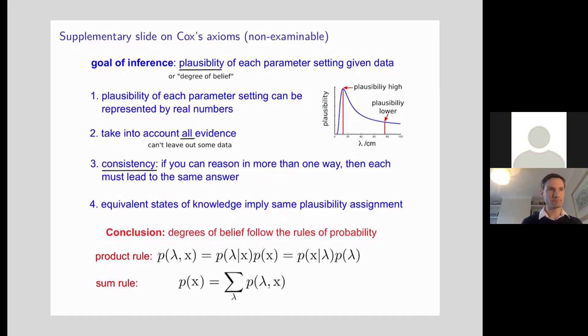So what are those axioms? First off, the zeroth axiom is exactly what we said in the lecture previously, which is that we're going to want to represent the plausibility of any setting of the parameters given the data using a real number. So the goal of inference in some sense is to return plausibility or degree of belief in any setting of the value of lambda. We're going to assume in our first axiom that this is just going to be represented by a single scalar real number.